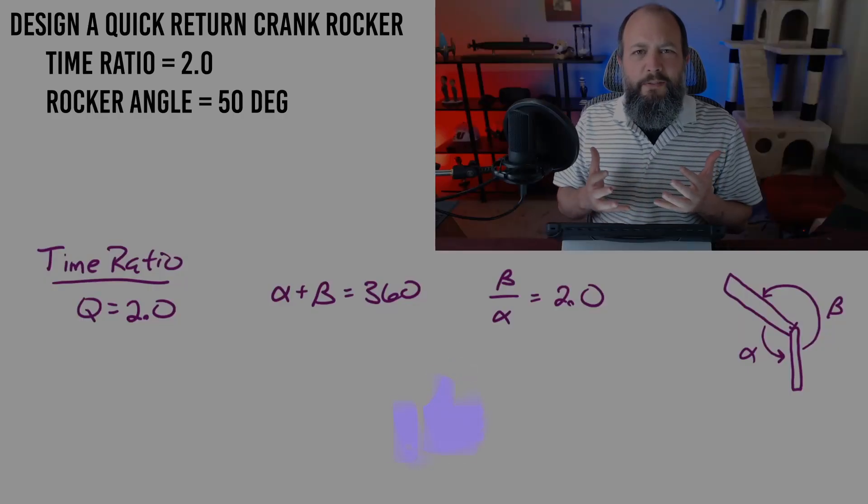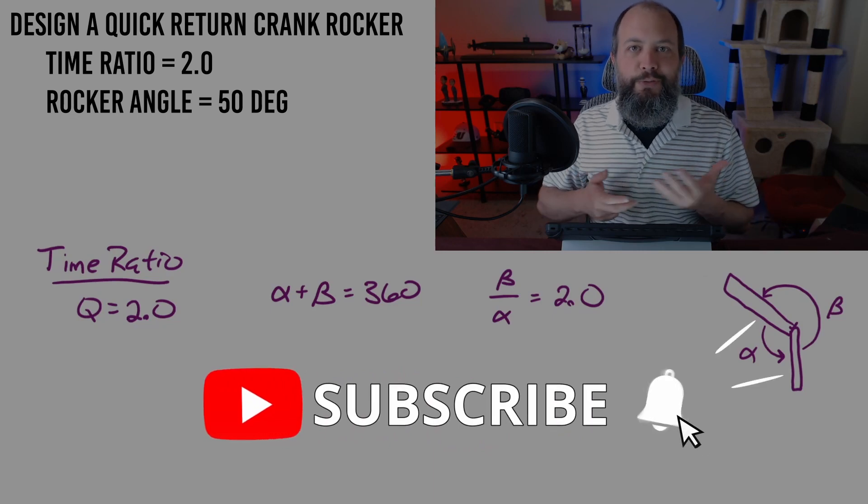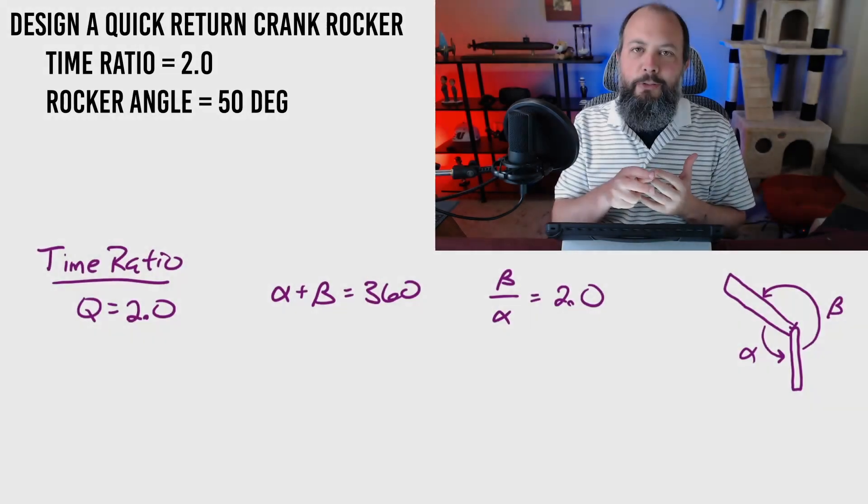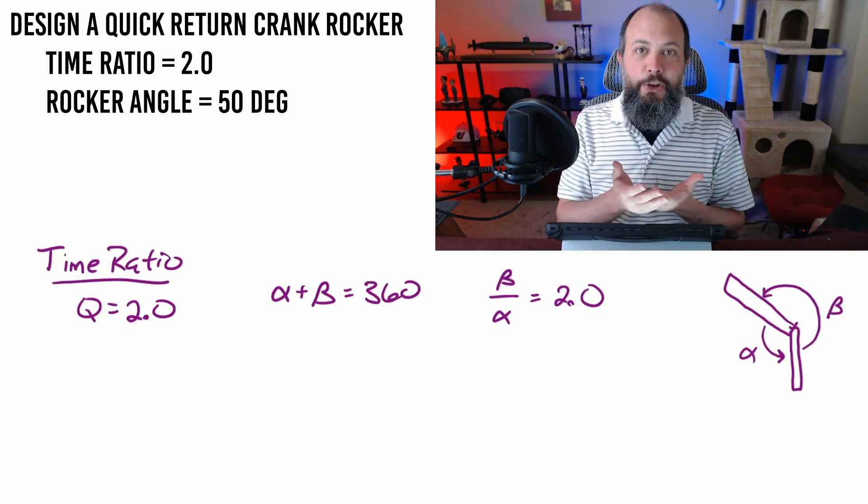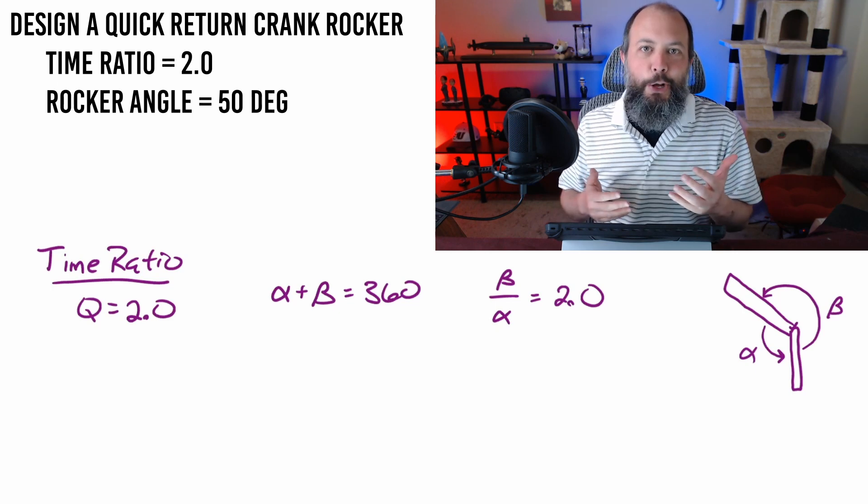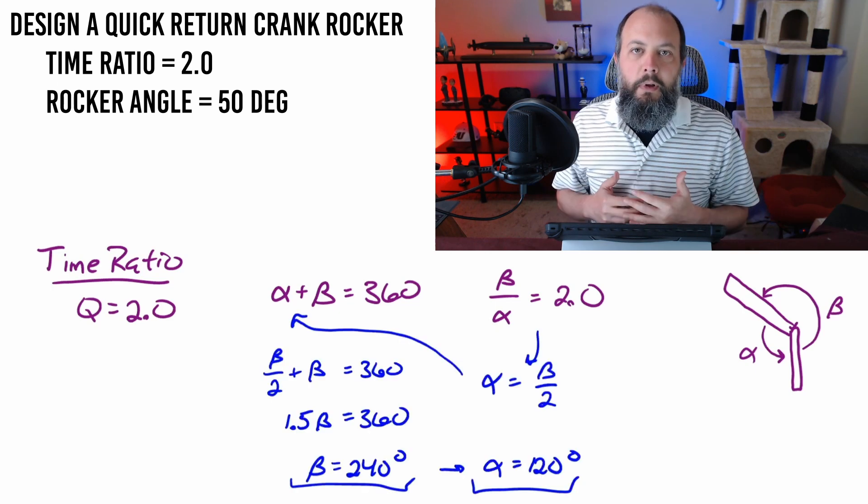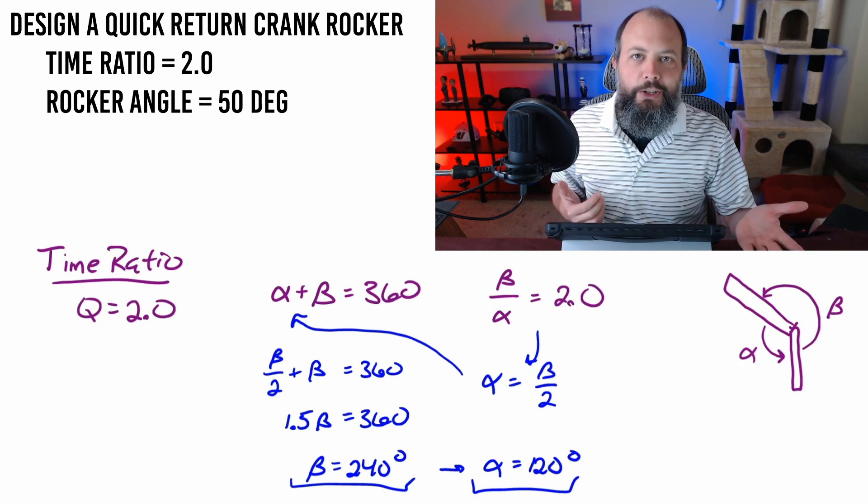So first thing is I'm going to find these crank angles, which are going to represent the toggle positions for the rocker. So alpha and beta - alpha will be the return stroke, beta the push stroke. They have to add up to 360 degrees. And if the time ratio is 2.0, that means when you divide them you're going to get a value of two for beta divided by alpha. And we get angles: alpha 120 degrees, beta 240 degrees.